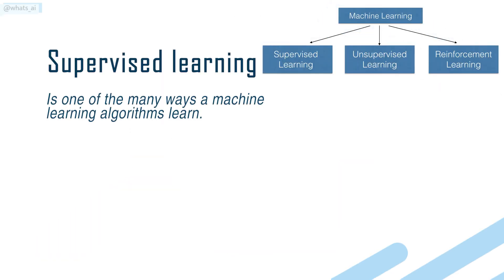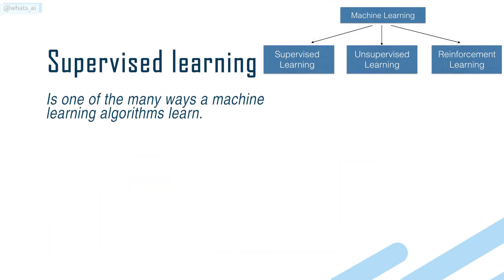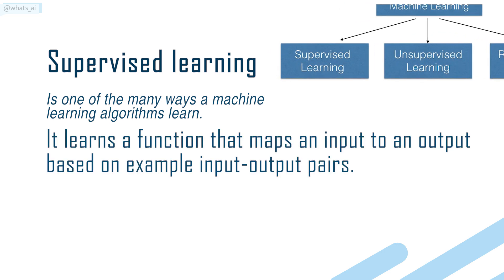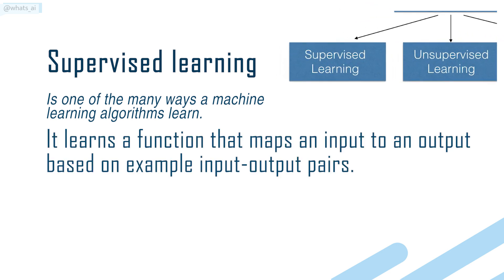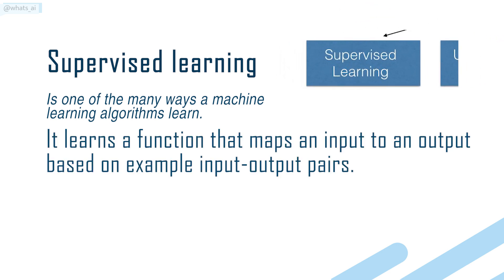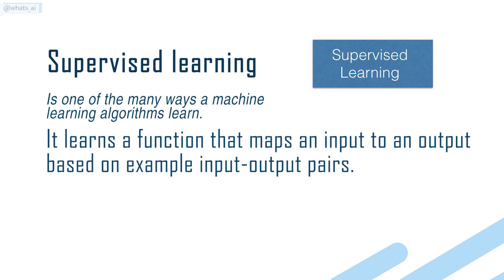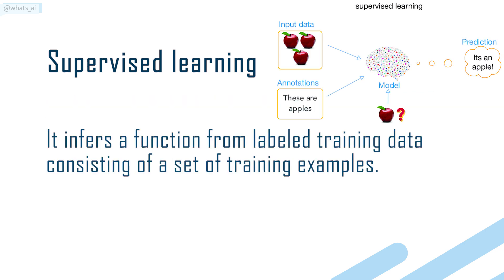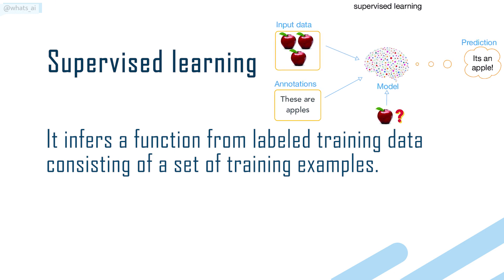Supervised learning is one of the many ways machine learning algorithms learn. It learns a function that maps an input to an output based on example input-output pairs. It infers a function from labeled training data consisting of a set of training examples.